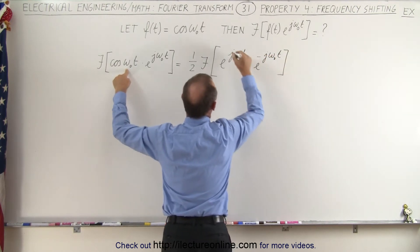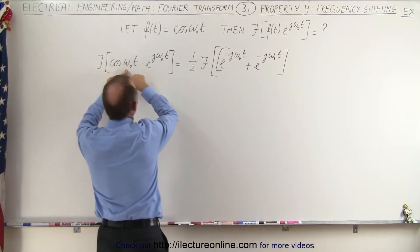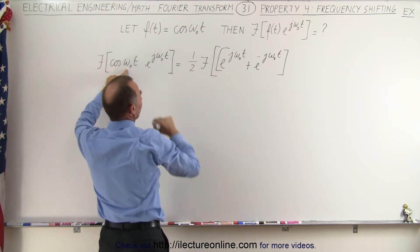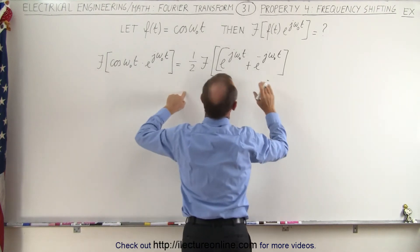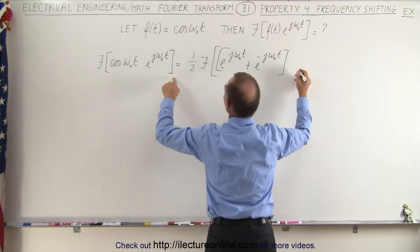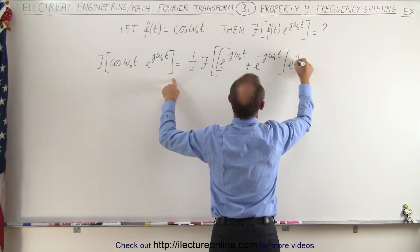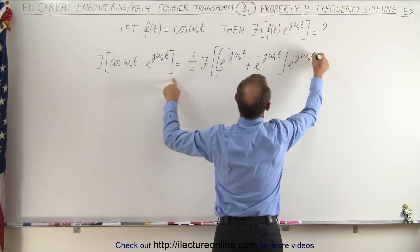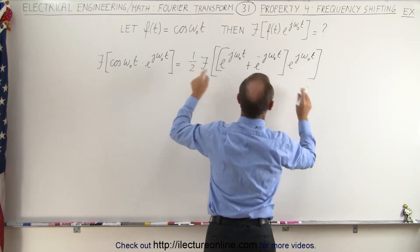That's the equivalent of cosine of omega sub-naught t divided by two, but we factor it out. And we multiply times e to the j omega sub-naught t.